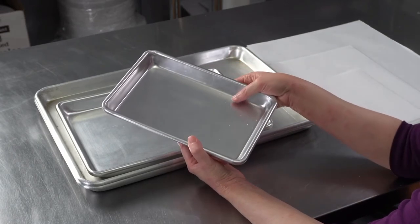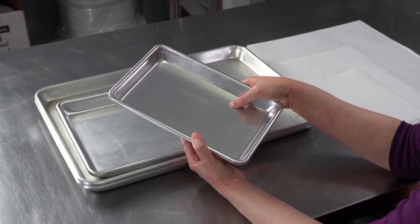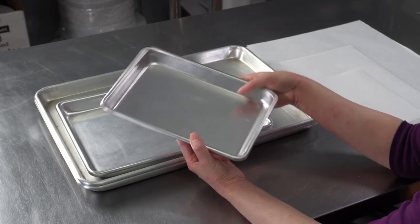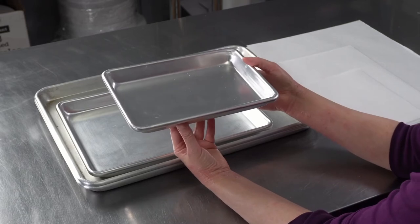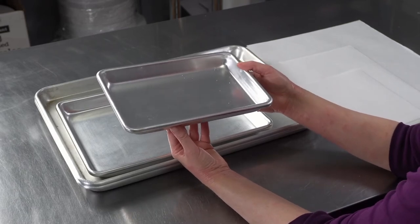The aluminum heats really nice and softly, the nice weight to it. The gauge of the metal is nice and thick. It'll keep it from warping and it's going to give you a nice even heat.